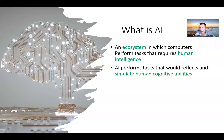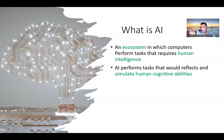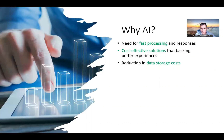What is AI? AI is an ecosystem in which computers perform tasks that require human intelligence. AI performs tasks that would reflect and stimulate human cognitive ability. For example, if somebody asks you something and you didn't know it, you go to Google, do some research, and then come up with an answer. That's basically what AI does.